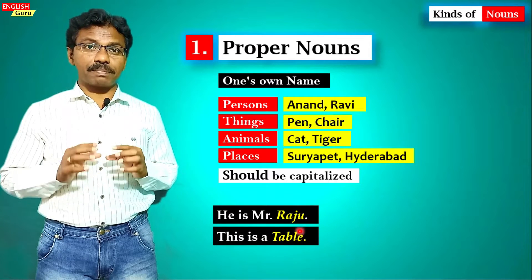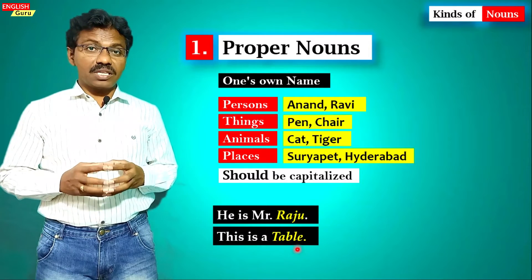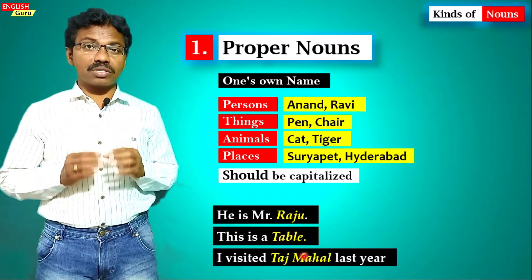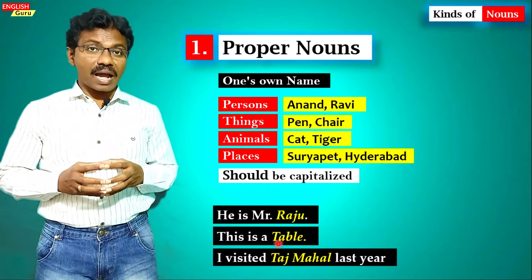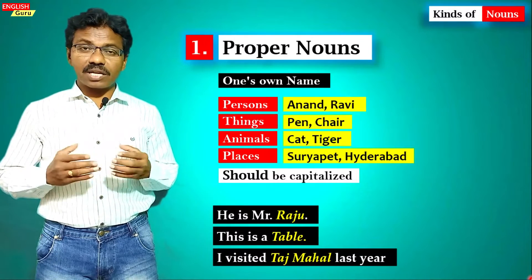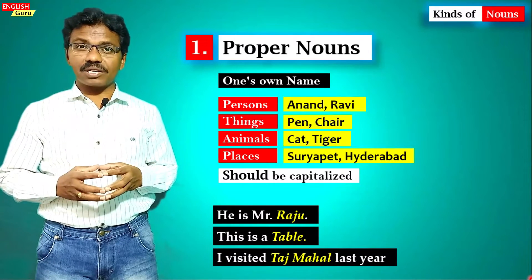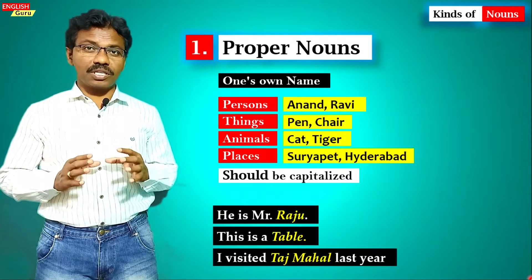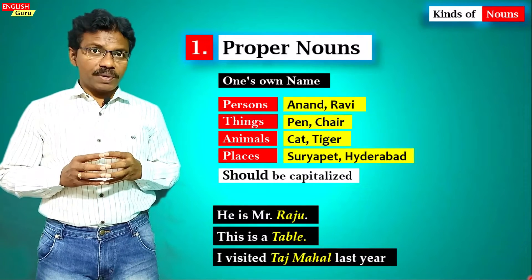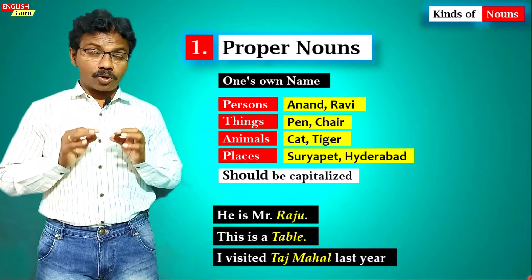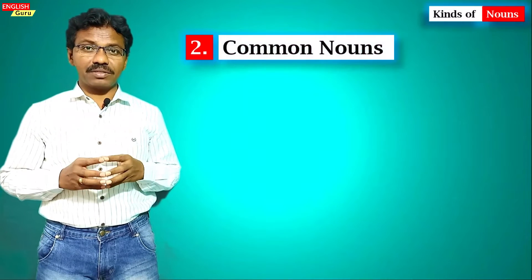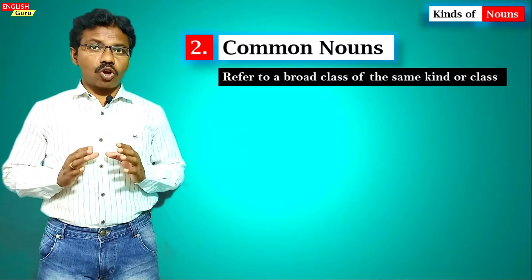For example: 'He is Mr. Raju' — 'Raju' is a proper noun, the name of a person. 'This is a table' — wait, 'table' here is actually a common noun, but 'Taj Mahal' in 'I visited Taj Mahal last year' is a proper noun because it is the specific name of a place or thing. Proper nouns are the proper names of particular persons, places, things, and animals.